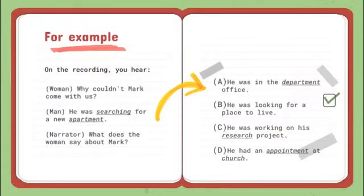On the recording you hear: Woman, why couldn't Mark come with us? Man, he was searching for a new apartment. Narrator, what does the woman say about Mark? The dialogue's final lines' crucial words are searching and apartment.